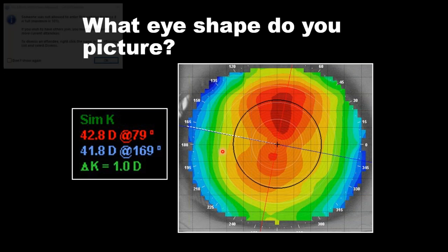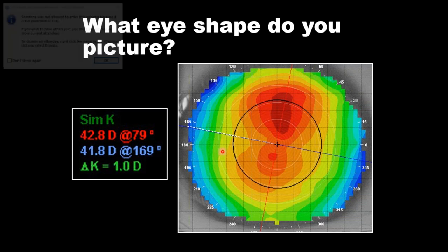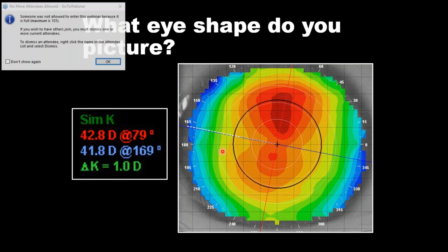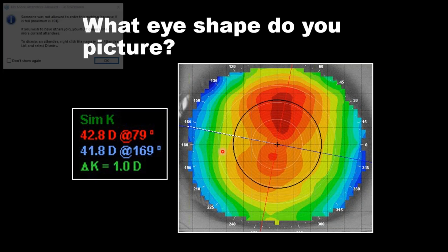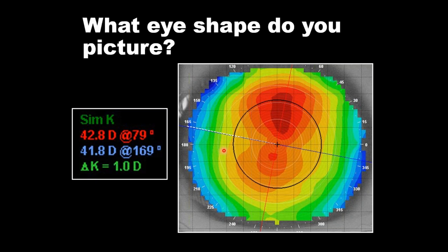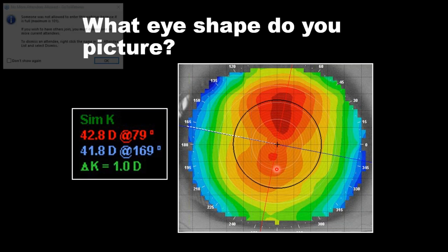This is the topography associated with these K readings — a simple, with-the-rule cornea with one diopter of corneal astigmatism. So K readings define this cornea very easily and very accurately.